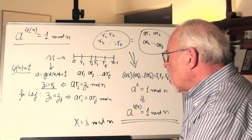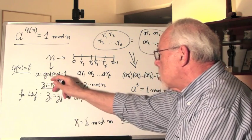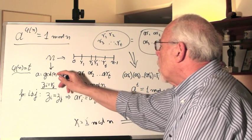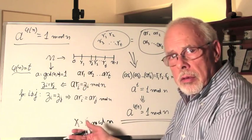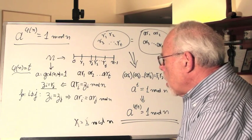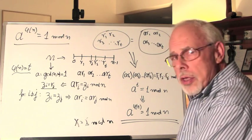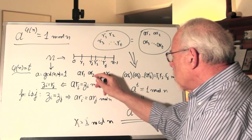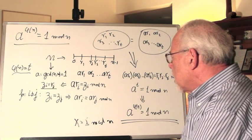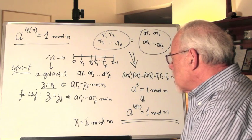And now we take any number a such that GCD(a,n) equals 1, meaning a and n are co-prime. And then what we do is very interesting. We build this set: a times R1, a times R2, a times Rt.